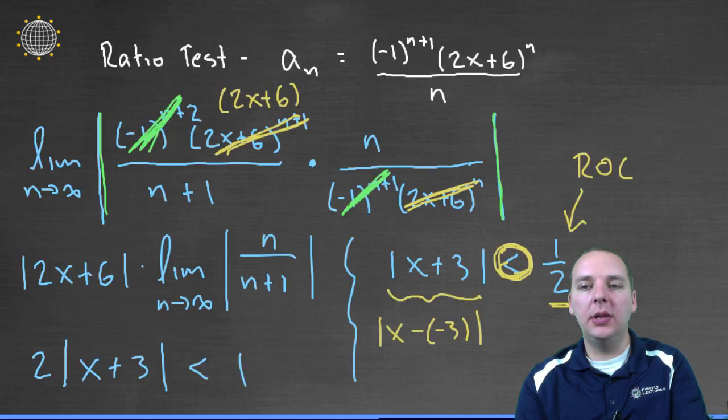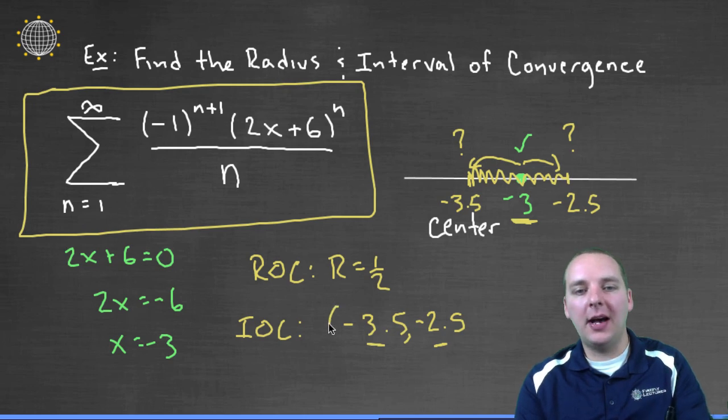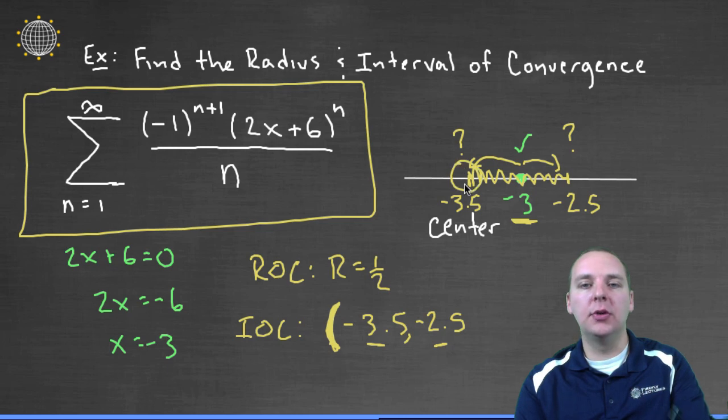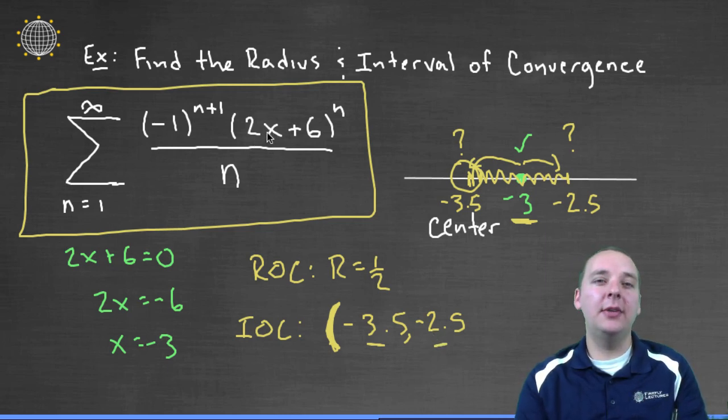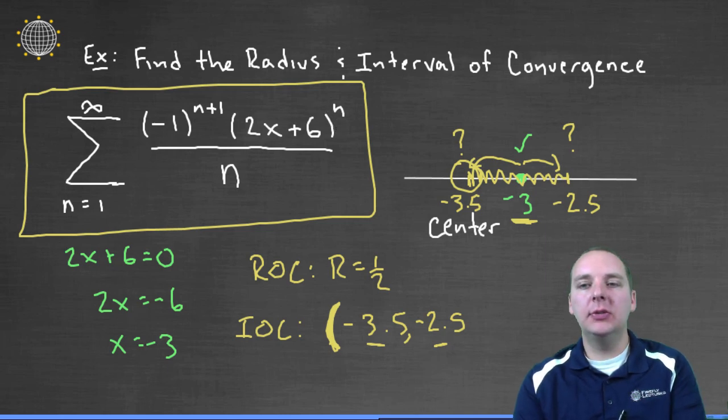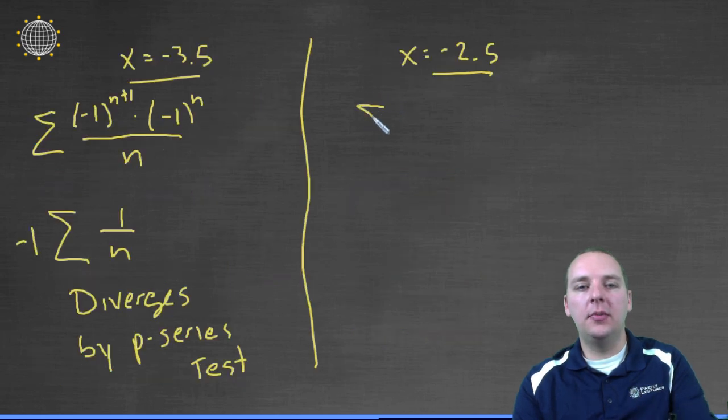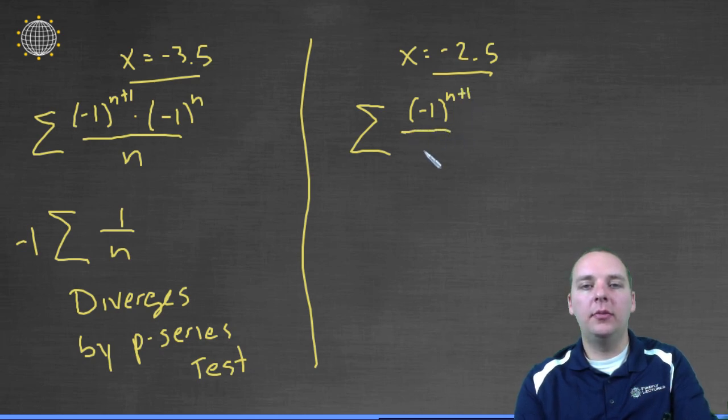And so what that implies is that at negative 3.5, it does not converge, and so we have an open parenthesis, an open parenthesis, or an open circle on the number line. Now we try negative 2.5, help me with this algebra here. 2 times negative 2.5 is negative 5. Negative 5 plus 6 makes 1, 1 to the n is 1, 1 to any power is 1.